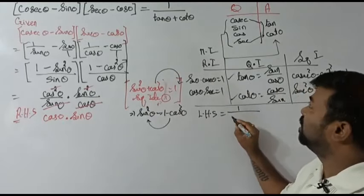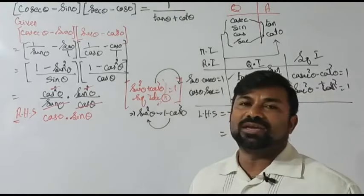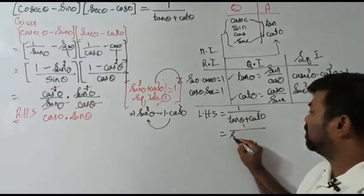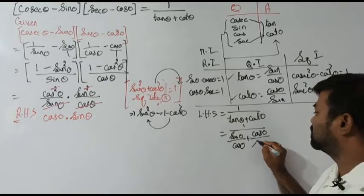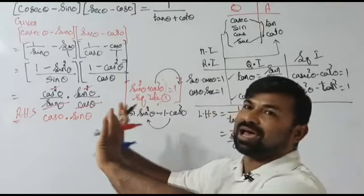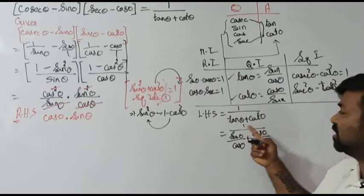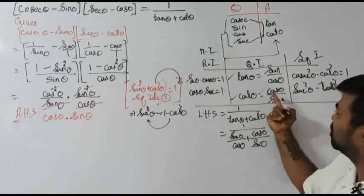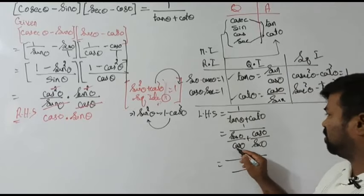Now working on the LHS — 1 divided by (tan θ plus cot θ). Everything is in terms of sine and cos, so I substitute: tan θ can be written as sine θ over cos θ, and cot θ can be written as cos θ over sine θ. Taking the LCM of the denominator, the LCM is cos θ into sine θ.